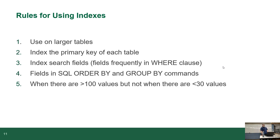A few rules when using indexes: use them on larger tables, since the more data there is the slower retrievals will be. Index the primary key of each table — pretty much every database server does this automatically. You retrieve records using the primary key when pulling a specific record, so it's always indexed. Index search fields — fields frequently used in the WHERE clause, like email address, phone number, names. It's also useful to index fields in ORDER BY and GROUP BY clauses.